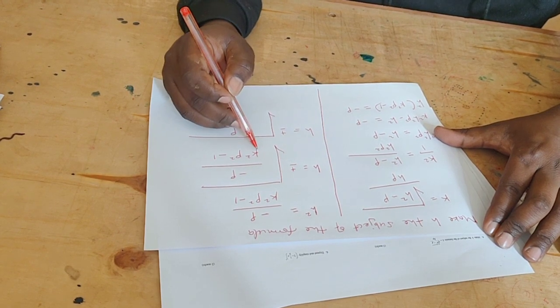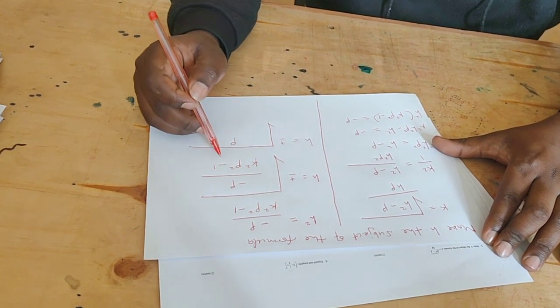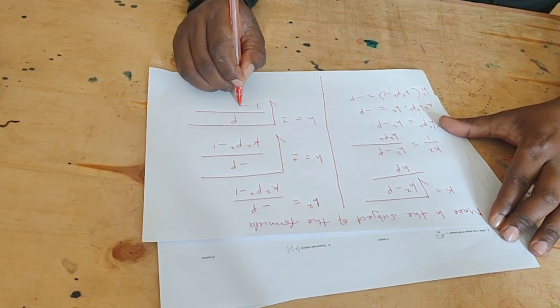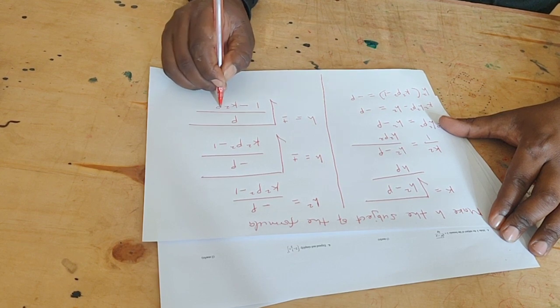This becomes positive. The denominator can be written as one minus k squared p squared.